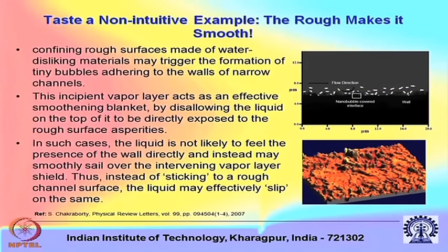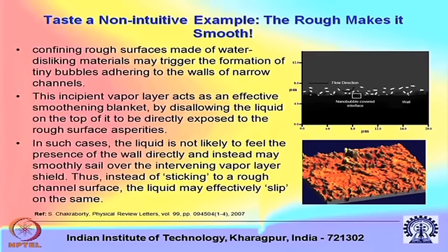A non-intuitive example: if we have rough surfaces, they are supposed to create more hindrance against fluid flow, but under certain cases it can be shown that rough surfaces may reduce friction. Not explicitly, but implicitly — if you have a rough hydrophobic surface in a small confinement, this surface can give rise to small nanometer-scale bubbles. The liquid flowing on the rough surface is not directly feeling the effect of the rough wall; it is gliding on a cushion layer of bubbles. So the roughness makes it smooth, because the roughness triggered the formation of nanoscale bubbles and the liquid flows in an apparently frictionless manner since it is not interfacing with the rough surface directly.